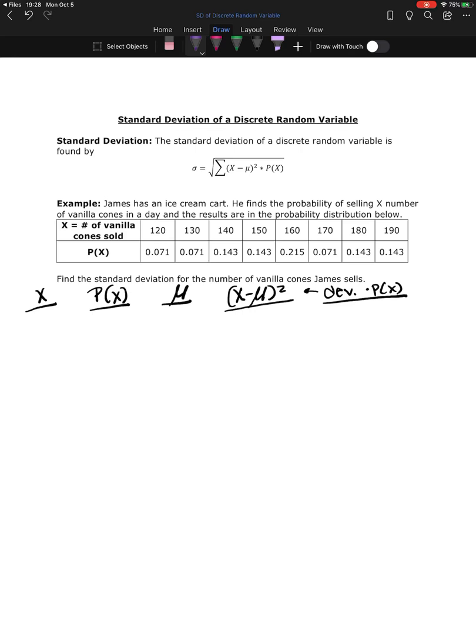So first thing I want to do is I want to list out all of the x values. And mainly I'm doing this right now, just so that I can see everything in this table. So we have 120 all the way down to 190. And then the probabilities from the table as well.